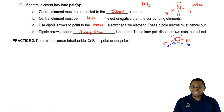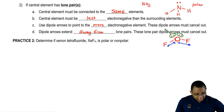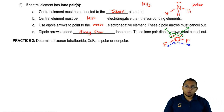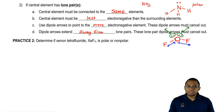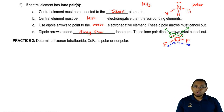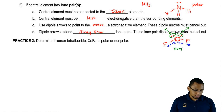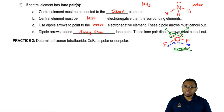Now for part D — lone pairs also have their own dipoles. We have a dipole arrow extending away from each lone pair on the oxygen. Both those dipole arrows are pointing in opposite directions, away from each other, so they cancel each other out. Part D is also followed. Using parts A, B, C, and D, we see that we follow every single rule. Therefore this molecule is nonpolar. That's the steps you have to take when answering these types of questions.